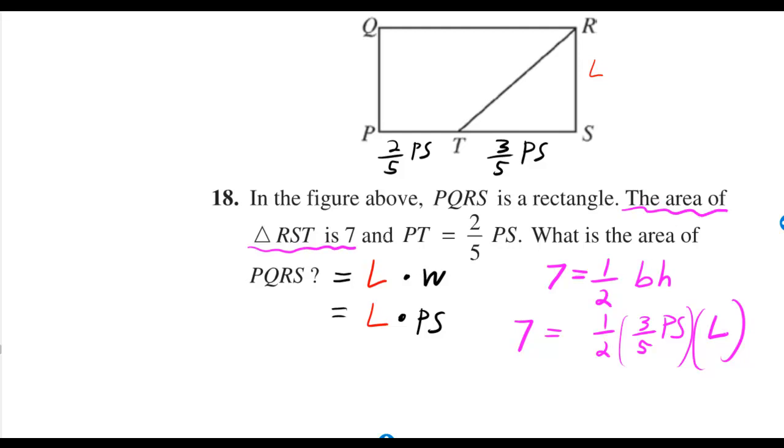It tells us the area of RST is 7. We can write that as an equation by writing 7 is equal to 1/2 base times height. The base is 3/5 of PS. If we knew PT was 2/5 of PS, then ST must be 3/5 of PS, what's left over from PS. And that's the base of triangle RST.